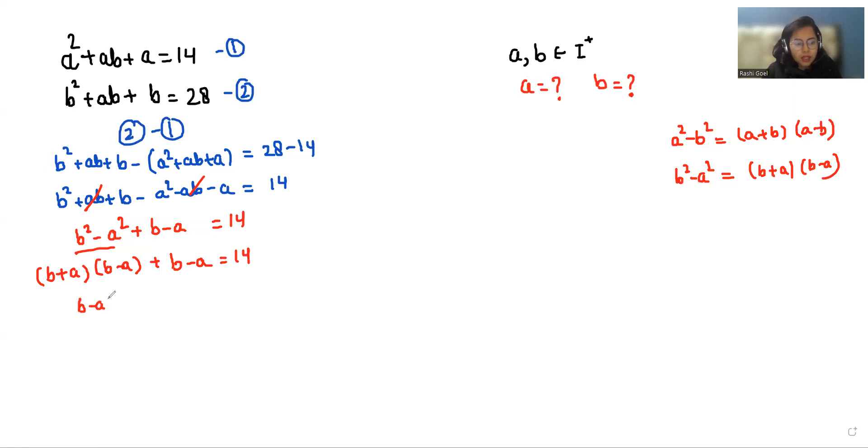Now we can take b - a as common. So what is left? (b + a + 1)(b - a) = 14.